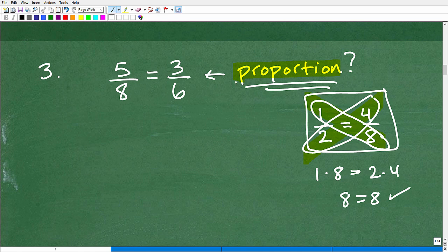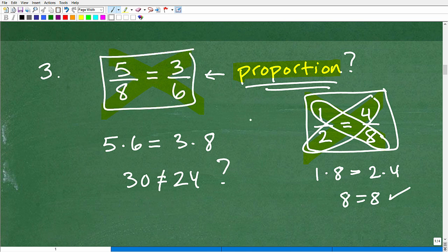So to check this, if this thing right here is a proportion, we need to go ahead and check the cross product. So let's go ahead and go 5 times 6, is that equal to 3 times 8? So 5 times 6 is 30. Is that equal to 3 times 8, which is 24? That is the question. No, they are not equal. So therefore, this is not a proportion.